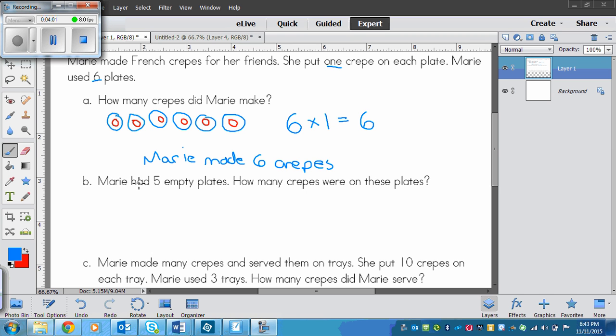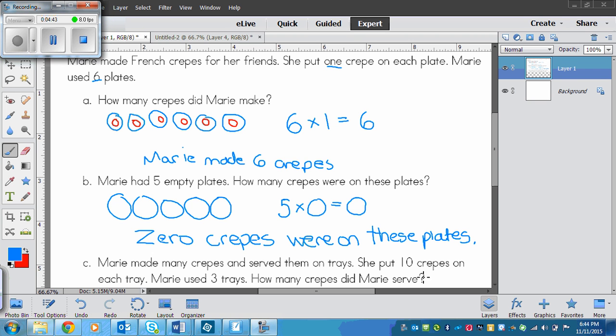Next question says, if Marie had five empty plates, how many crepes were on these plates? So I could draw another picture. So it says she has these plates, but then she also has five empty plates, and it wants to know how many crepes are on these plates. But they're empty, so there are no crepes on this plate. So our multiplication fact would look like this: we have 5 plates times 0 crepes on them. Now remember, anything times 0 equals 0. So we can write our sentence. So zero crepes were on these plates.